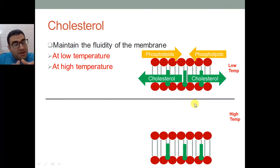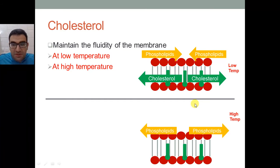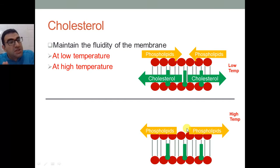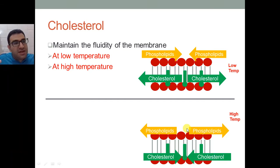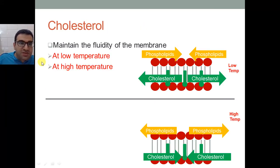At high temperature, things tend to expand. For example, like an ice cube exposed to high temperature — it melts because molecules inside get far away from each other. The same thing happens here: phospholipids tend to move away from each other, increasing the fluidity of the cell membrane to a very high extent — a level that must not be reached. That's why cholesterol opposes the phospholipids, preventing them from sliding apart and maintaining the fluidity.